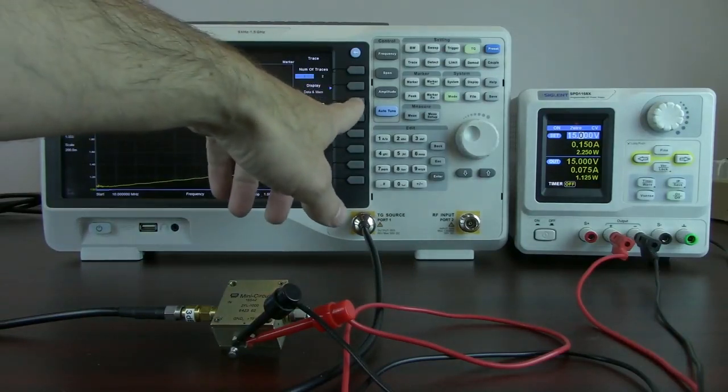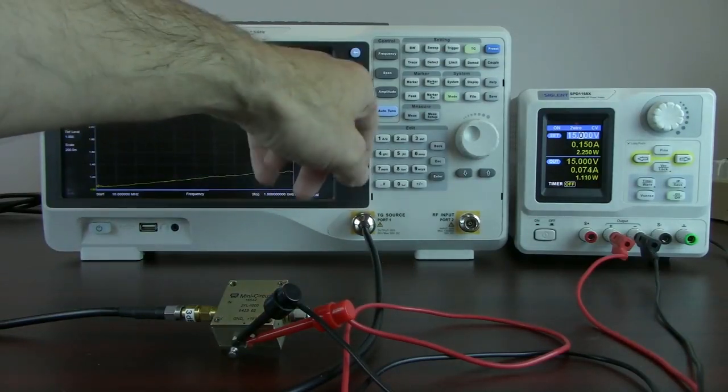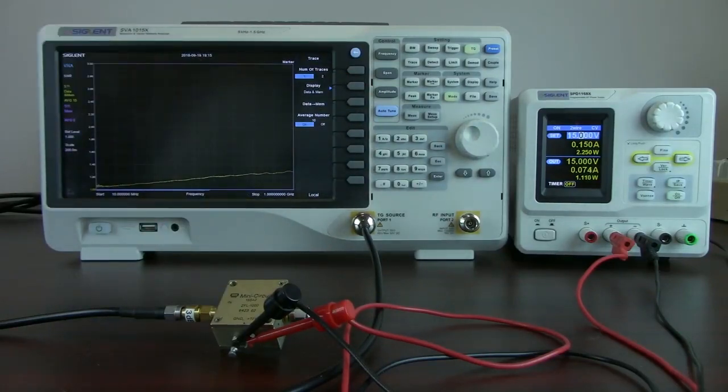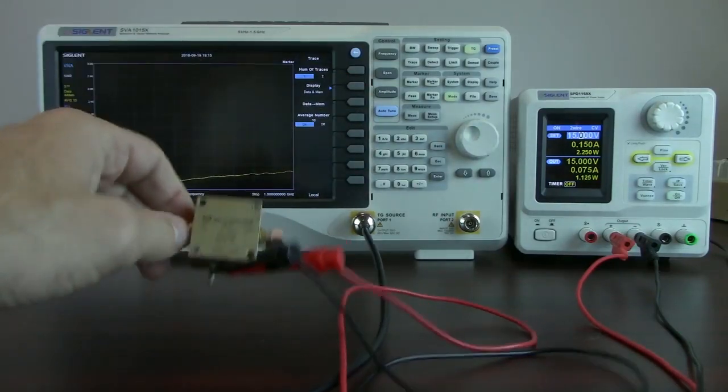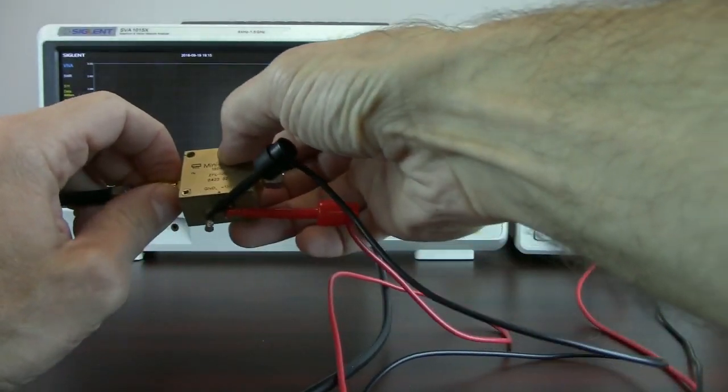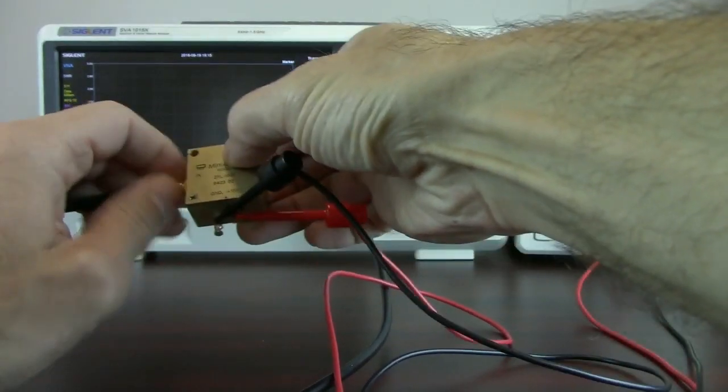I can save that into memory. So I can go data memory, and that's going to freeze that particular input curve for the VSWR. And now let's take a look at the output curve. So I'm simply going to disconnect the cabling from the input.